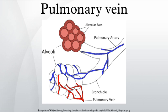Two pulmonary veins emerge from each lung hilum, receiving blood from three or four bronchial veins apiece and draining into the left atrium. An inferior and superior vein drains each lung, so there are four veins in total.